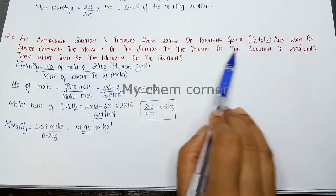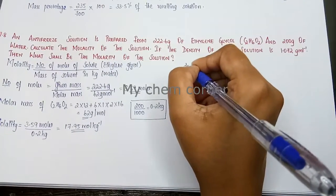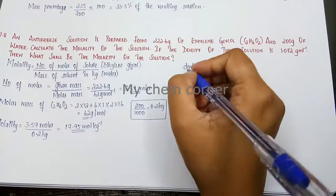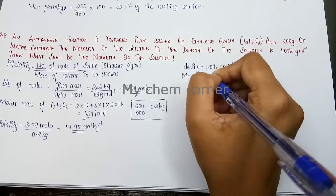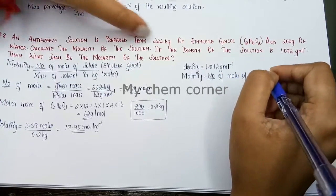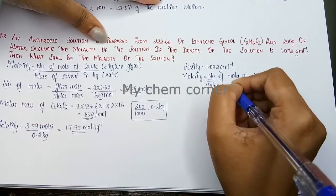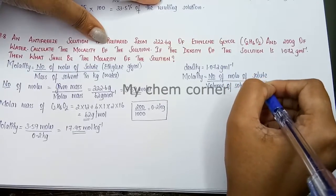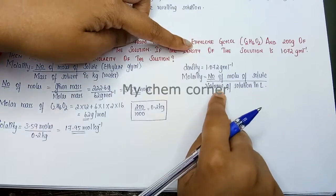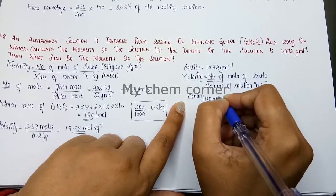Now for the second part — calculating molarity from the given density. Density is given as 1.072 grams per mL. Molarity equals number of moles of solute divided by volume of solution in liters. Volume is not given directly, but we know the relation: density of solution equals mass of solution divided by volume of solution.